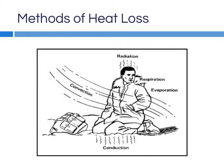There are four main methods of heat loss from the body: conduction, convection, radiation, and evaporation. Conduction is the loss of heat through direct contact with an object — in this picture, it is through the man's contact with the ground.